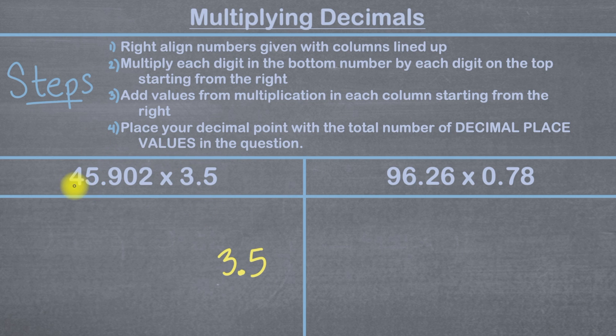So we're going to write this number down first. Next, we're going to place this number 45.902 directly on top of 3.5. But we have to make sure that we right align it. In other words, we're not going to go past this five here and we're going to start by writing the first digit on the right on top of this number here. So in the number 45.902, I'll take this two and right align it right above the five.